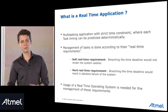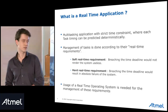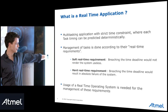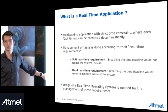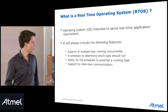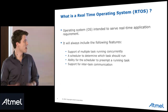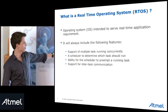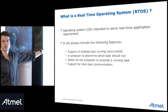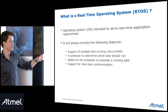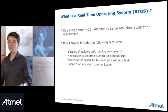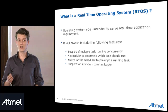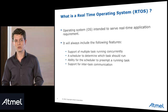Real-time applications deal with those two kinds of tasks. In order to manage those requirements we really need what we call a real-time operating system. A real-time operating system mainly intends to serve real-time application requirements. It will always include support for multiple tasks running concurrently, and a scheduler which determines which task needs to run. Since we are working with a single-core device, the scheduler selects which task will be executed by the core.